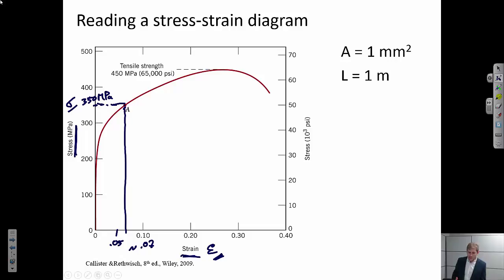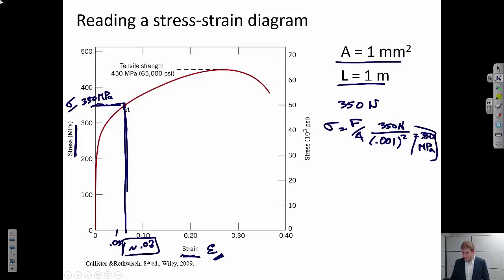Usually an example problem would be a little bit more complicated than that. So maybe I would give you an area and a length. And I could say, okay, let's apply some sort of force to the material. So let's say I'm applying 350 newtons. Well, the stress equals force over area. So 350 newtons, let's say the area is one millimeter squared, so that's 0.001 meter squared. So that is going to equal 350 megapascals, if I did my math right. So I now know what the stress is. And I can calculate a strain from that. So I say my strain is 0.07.